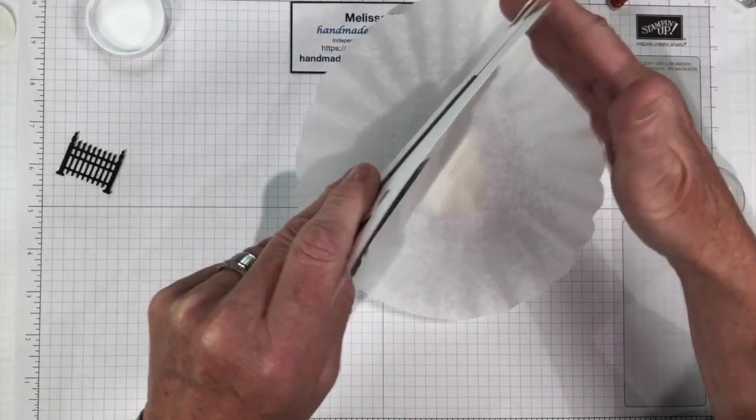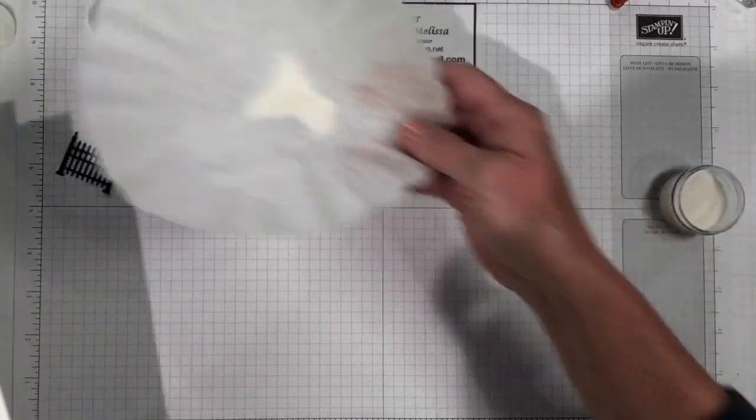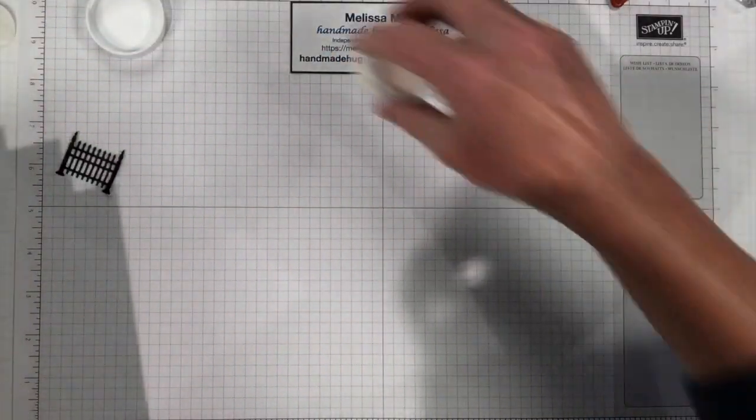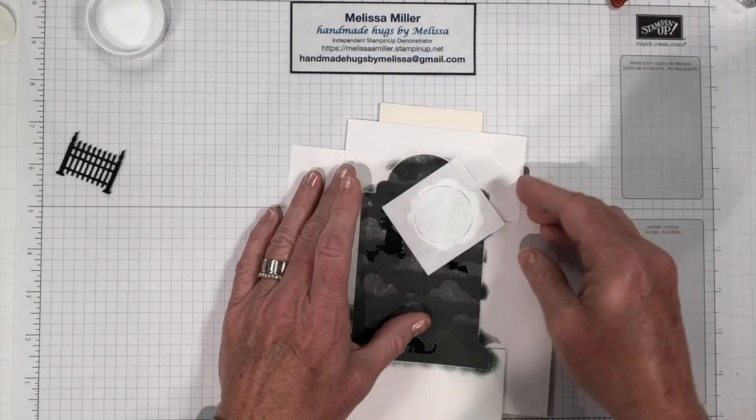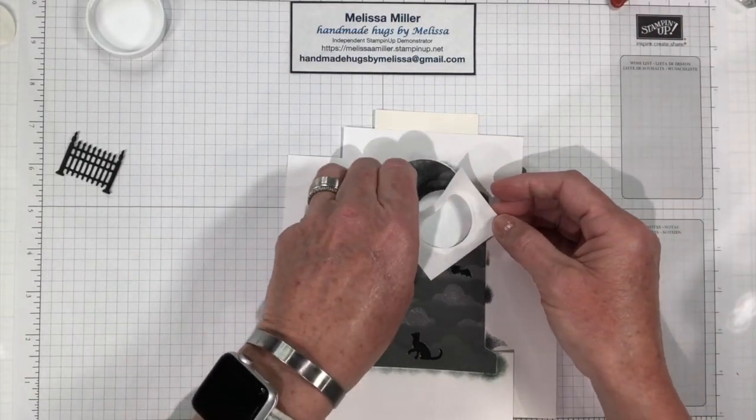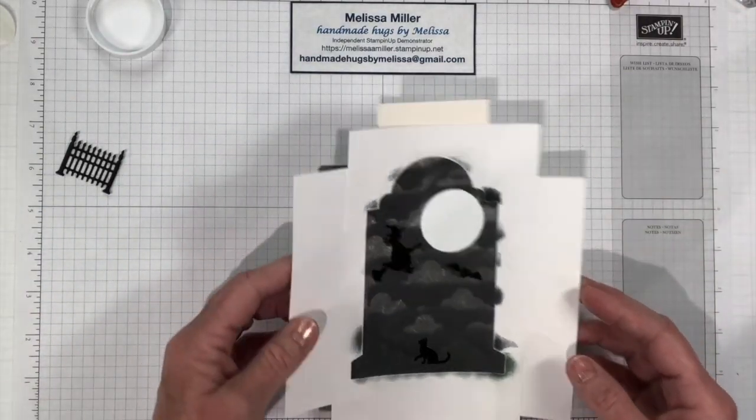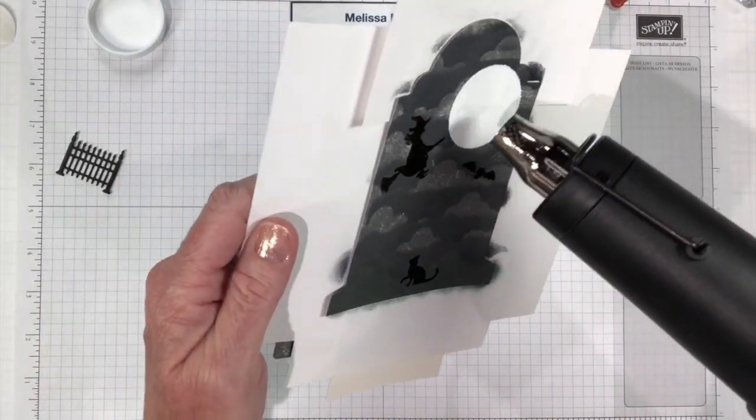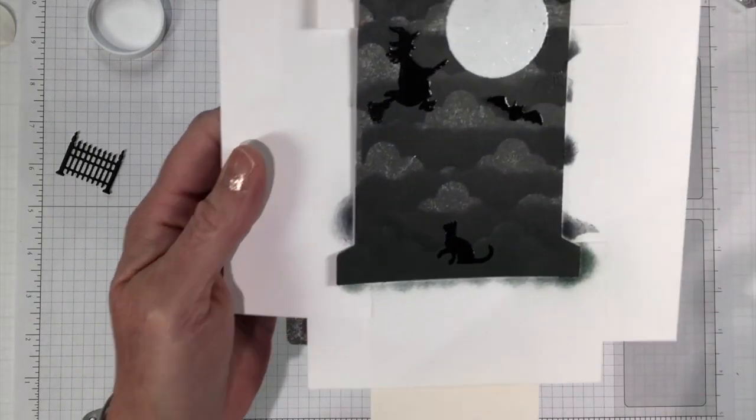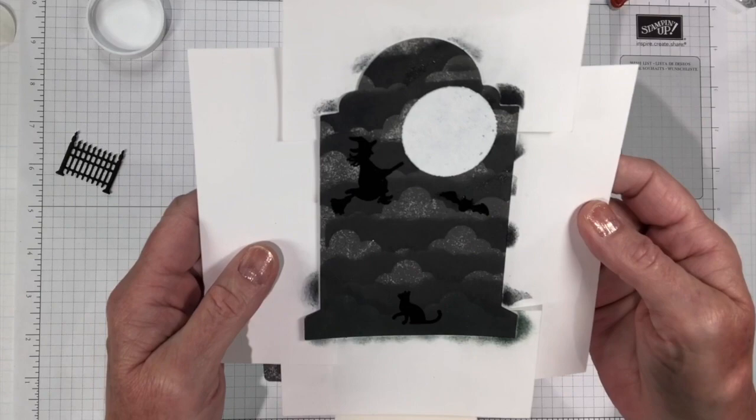We're just going to dump that on. Kind of shake that off. You can see that it's nice and coated. So now we're going to move that and then we will take this off. Perfect. So now we're going to heat emboss. And you can see that as soon as it turns shiny, you know that it's done.